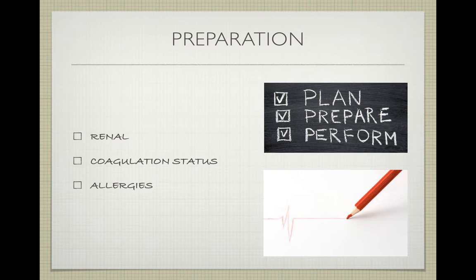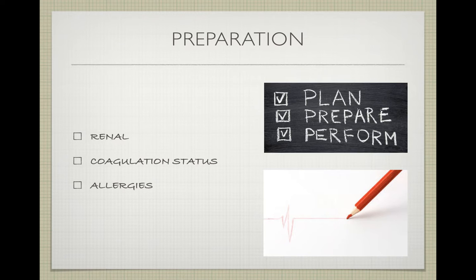After planning a vascular intervention, an important step is to prepare the patient well. A big part of this involves asking about the patient's renal function, coagulation status, and any allergies. A patient needs good kidney function because the kidneys clear the contrast from the blood, which is a very demanding process. If the patient has poor kidney function, this can further compromise renal function and bring lots of complications.